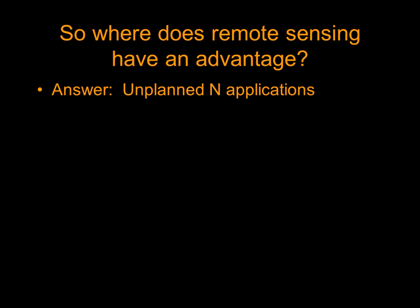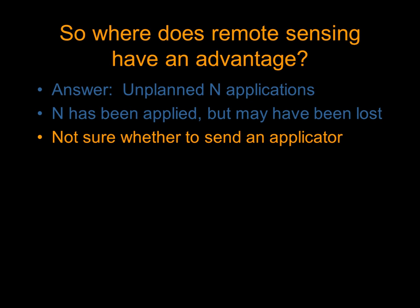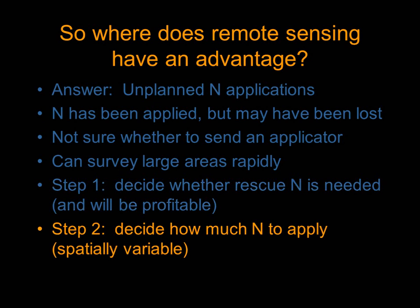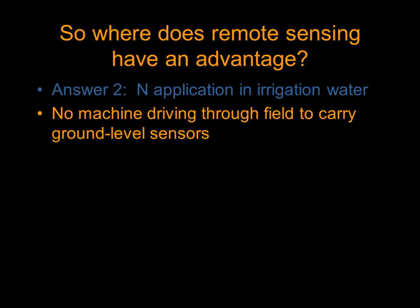Where does remote sensing have an advantage? In my opinion, the biggest answer is the unplanned nitrogen application — when you're not planning to take a machine into the field. You've applied your nitrogen but it may have been lost, and you're not sure whether to send an applicator. If you send one with ground-based sensors and it turns out you didn't need it, you've spent a lot of money and lost time that could have been used treating another field. Remote sensing can survey large areas rapidly. The way I break it down: step one is deciding whether rescue nitrogen will be profitable, and step two is deciding how much to apply. Those are the two products we've developed based on remote sensing. Remote sensing also has an advantage when applying nitrogen through irrigation water, since you're not driving a machine through the field — remote sensing diagnosis is probably the best approach there.